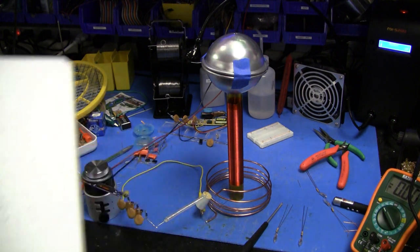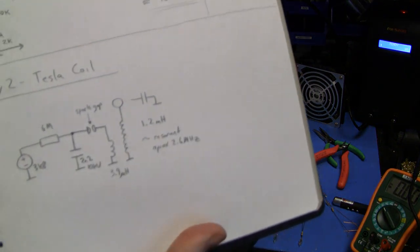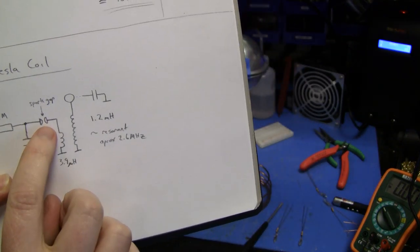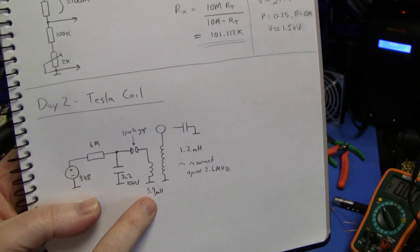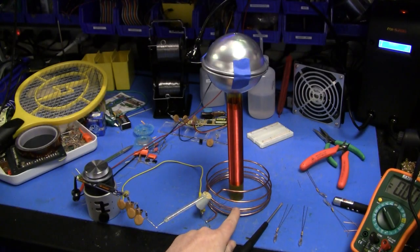This charges up the 2.2 nanofarad capacitor, which is then discharged through a spark gap, which is set to about 3.5 kilovolts or thereabouts into a 3.9 microhenry primary, which is this thick piece of copper wire down here.